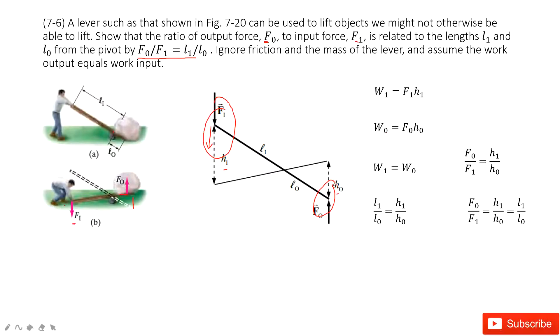Then we look at the work done by F0. The force F0 times the distance h0, cosine theta zero, cosine zero is one, so this is F0 h0. It tells us we assume this work equals, so W1 equals W0.